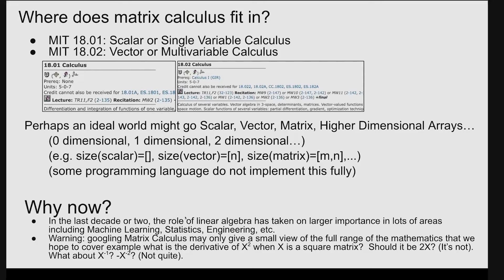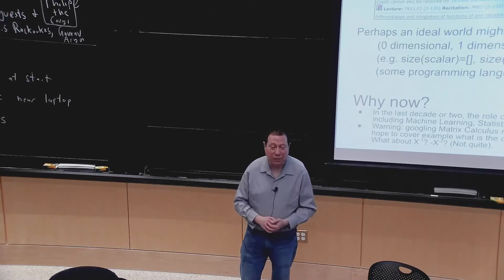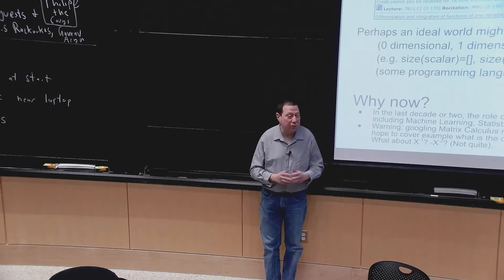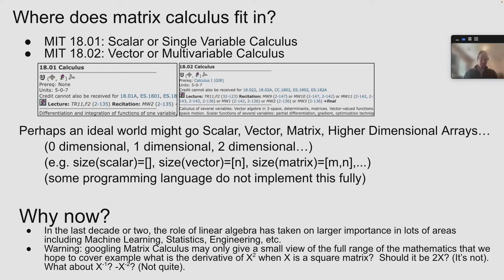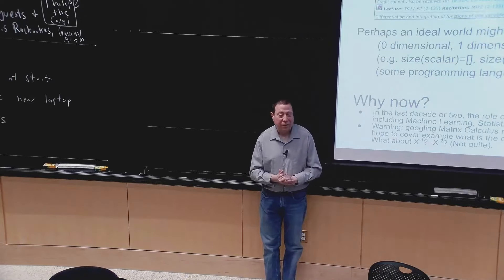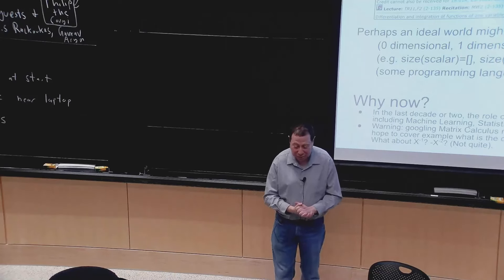Let me delve right in — where does matrix calculus fit in? If you look at MIT's course catalog, this is replicated probably in universities all over the planet. There's single variable calculus — the first semester, 1801 — where you learn how to take the derivative or an integral of a function of one variable. And then there's 1802, where you learn vector calculus or multivariate calculus, the basic definitions of a gradient or a Jacobian. I bet everybody in this room has gone through these two classes one way or another.